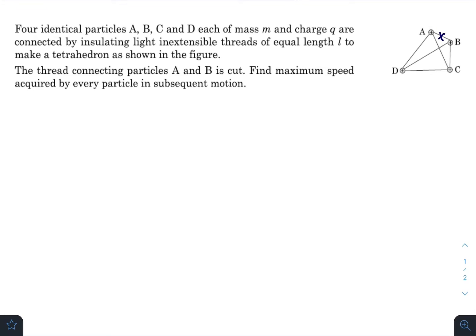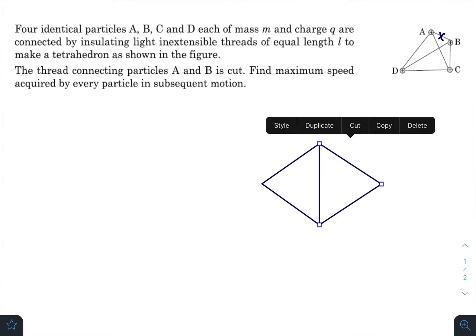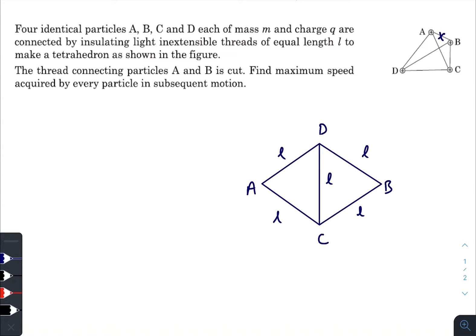So after breaking this string, the final diagram for minimum potential energy would look something like this: this one will be A, B, C, and D, each of length l. So this length will be root 3 times l.